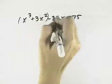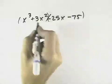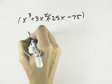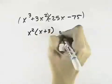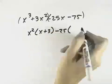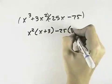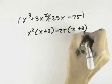What I'm going to do is group the first two terms and the last two terms together. The first two terms have an x squared in common, so if I divide out the x squared, I'm left with x plus 3. The second set of terms have a negative 25 in common. If I divide out a negative 25, I'm left with a positive x and a positive 3.